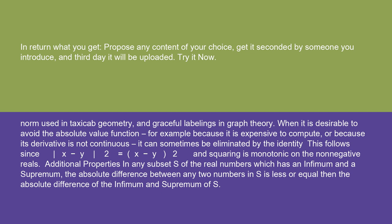Additional properties: In any subset S of the real numbers which has an infimum and a supremum, the absolute difference between any two numbers in S is less than or equal to the absolute difference of the infimum and supremum of S.